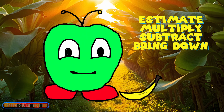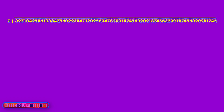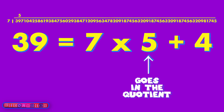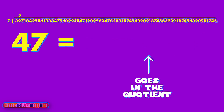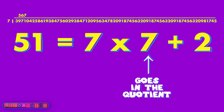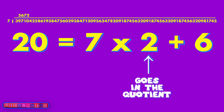Eat More Sour Bananas — that's a memory device for estimate, multiply, subtract, and bring down. We're going to do that over and over again. Seven goes into 39 five times; you have four left over, then bring down the seven. Seven goes into 47 six times with a remainder of five. Bring down the one. Seven goes into 51 seven times with a remainder of two. Bring down the zero. Seven goes into 20 two times with a remainder of six.